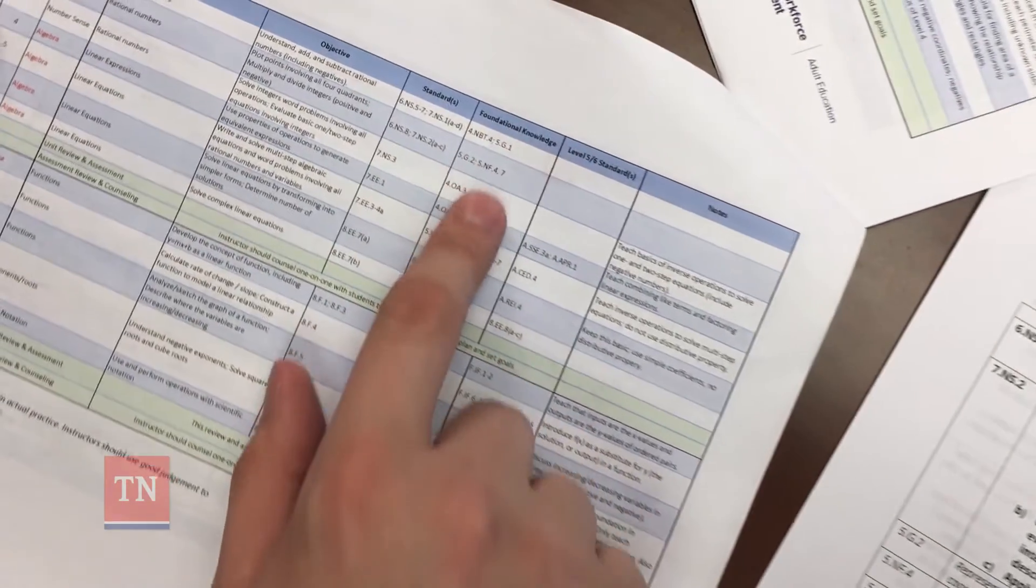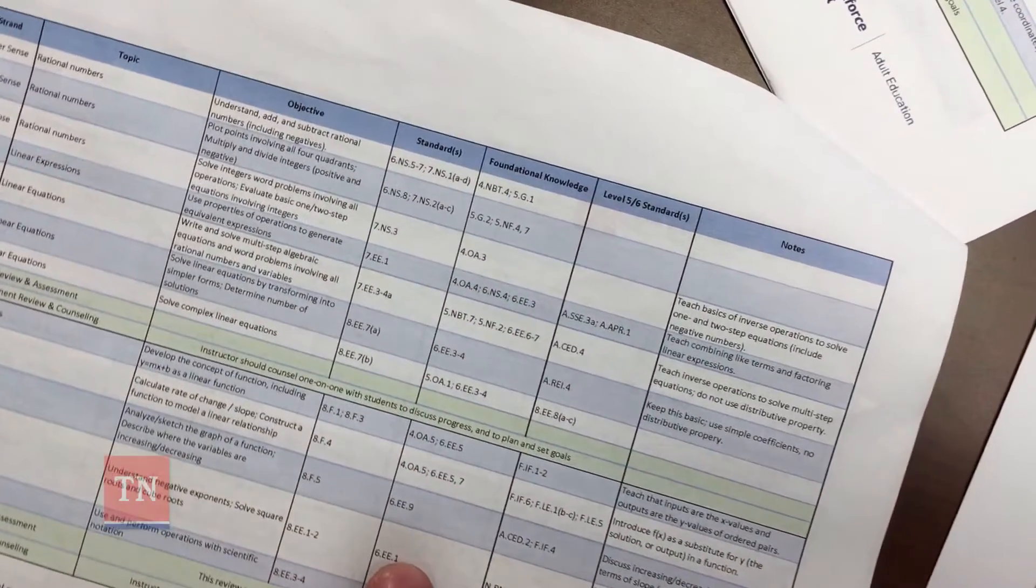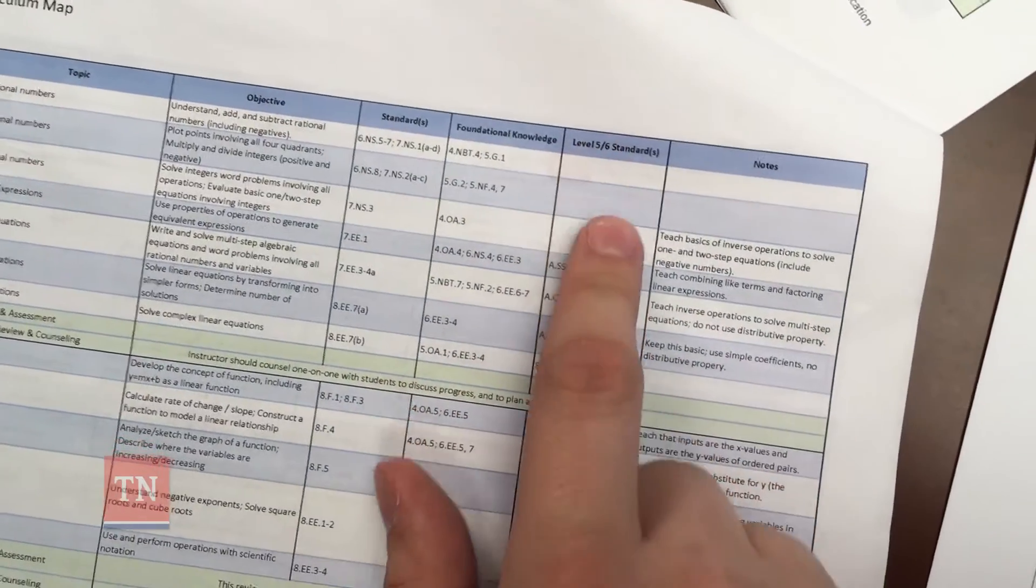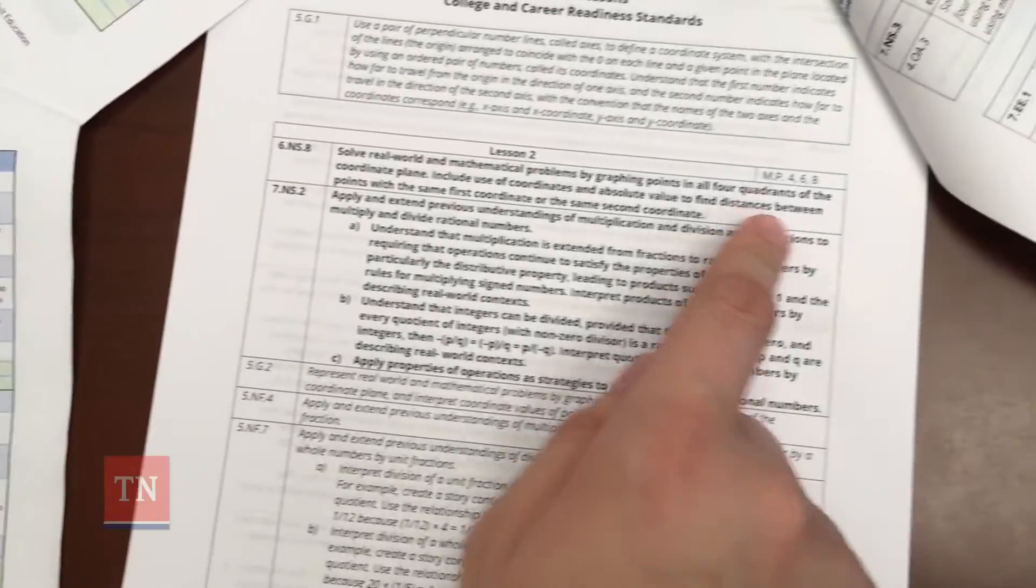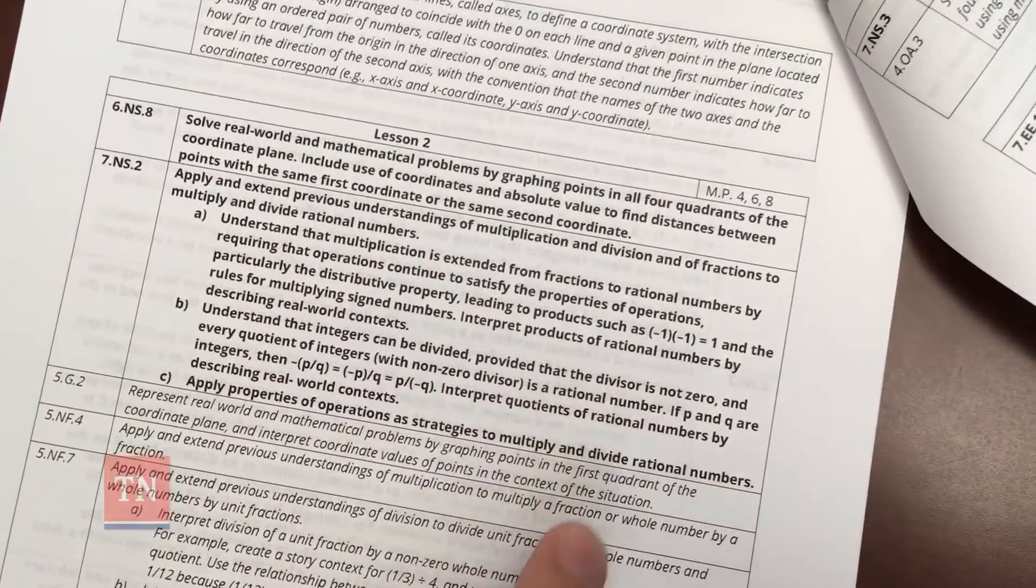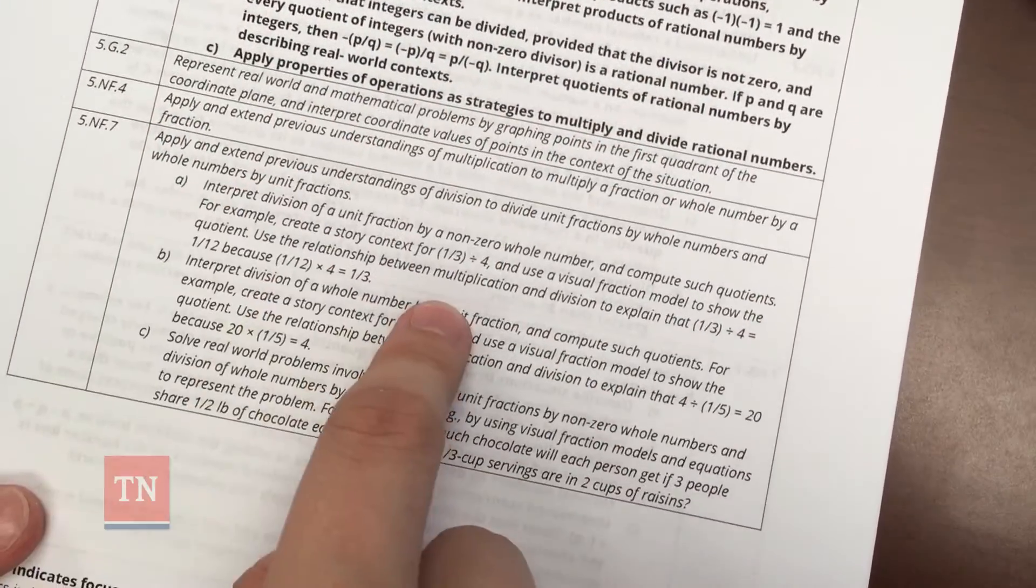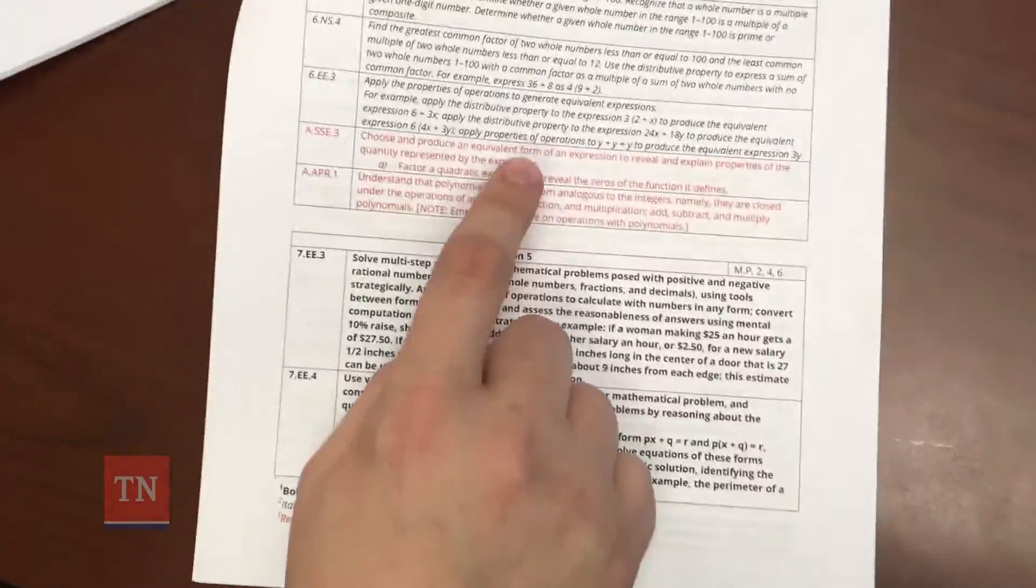Notice the map also has foundational standards for your lesson and level 5.6 standards for your lesson. On the standards document, the main standards are in bold and the foundational standards are in italics. And the level 5.6 standards, if there are any, are in red, like in lesson 4. So now that I've read through the objectives and standards, I've got an idea of what this lesson is about.